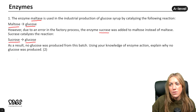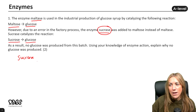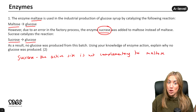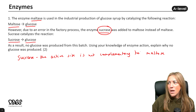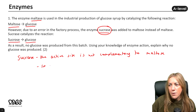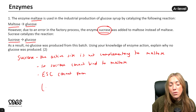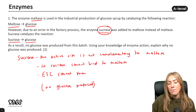The question asks: use your knowledge of enzyme action to explain why no glucose was produced. The answer is that the active site of sucrase is not complementary to maltose — it is complementary to sucrose, its specific substrate. Therefore sucrase cannot bind to maltose, and enzyme-substrate complexes cannot form, so no glucose is produced.